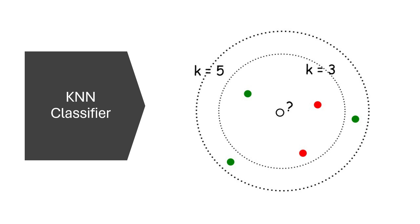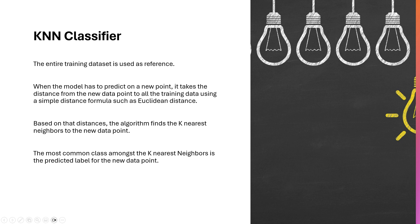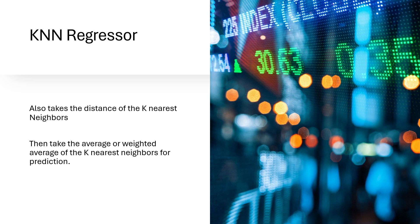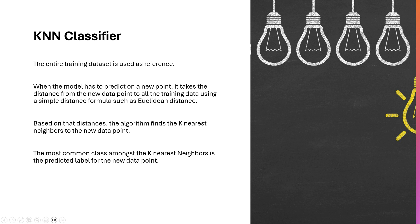To summarize how a KNN classifier works: the entire training dataset is used as reference. When the model has to predict on a new point, it takes the distance from the new data point to all training data using a distance formula such as Euclidean distance. Based on the distances, the algorithm finds the K nearest neighbors, and the most common class among them is the predicted label for the new data point.